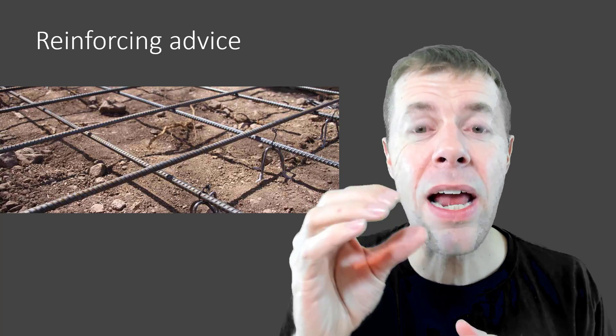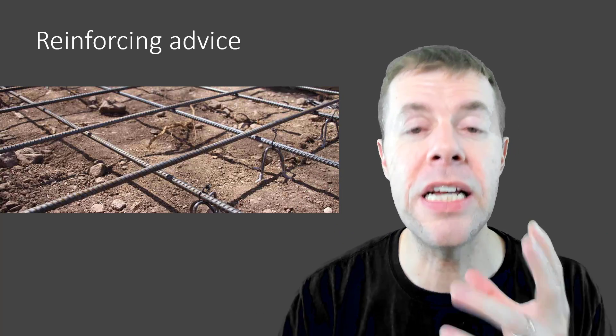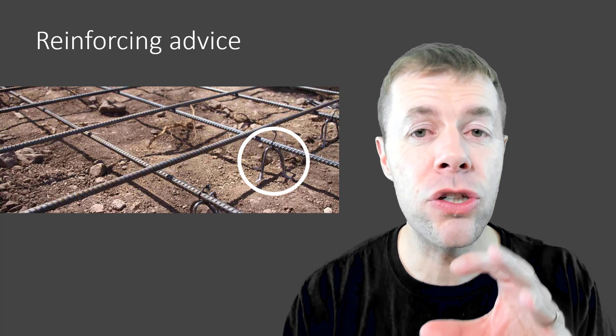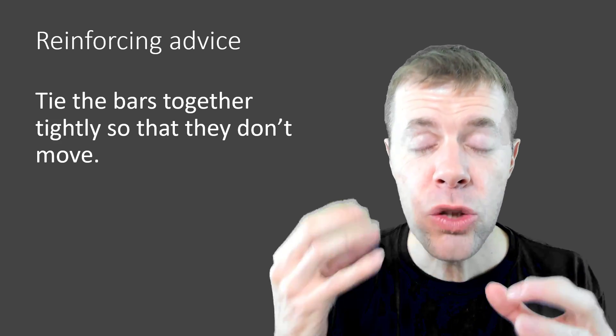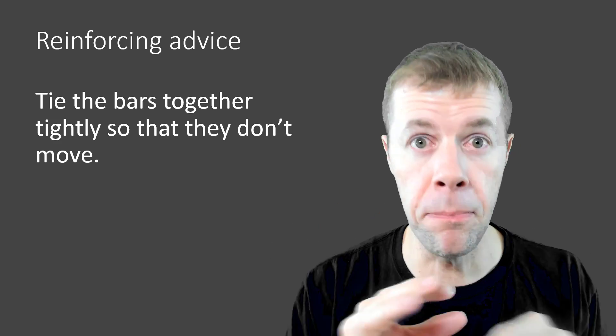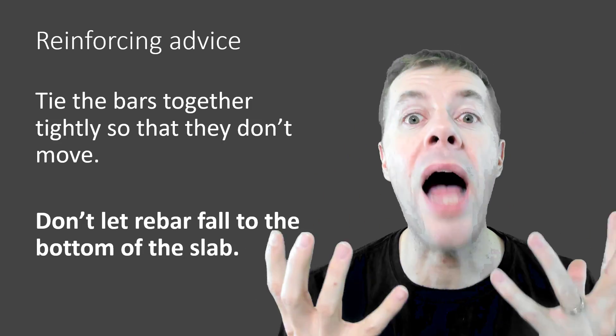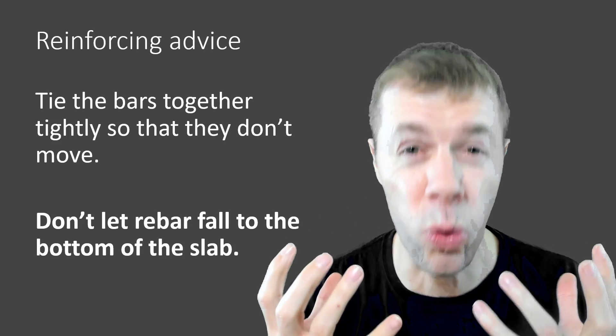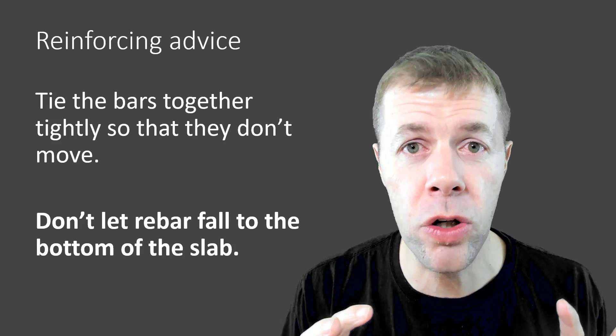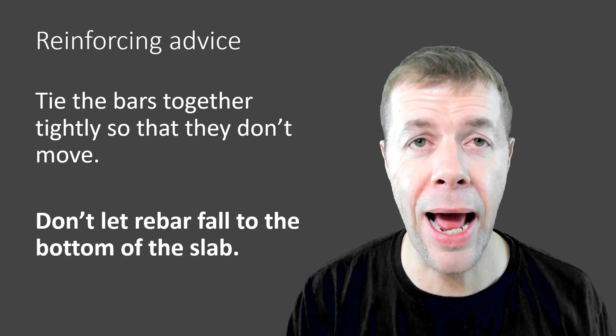It is critical that we get our rebar at the right location. To do that, we're going to use something called a chair — shown here as a metal chair or a plastic chair — that will hold the rebar from the surface at the exact height that you want it. Very, very, very important. Also, you want to tie your reinforcing together extremely tightly so that as you're pouring the concrete they don't move. You do not want to let your rebar go to the bottom of your slabs — that is the worst ever. You might as well not have put rebar in the concrete at all if that happens.